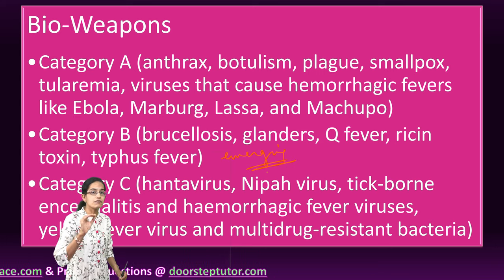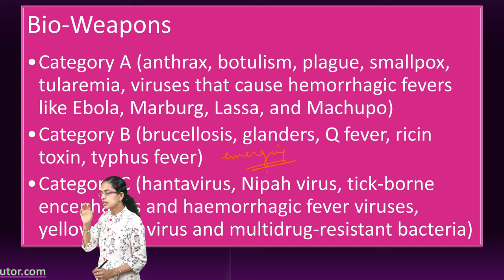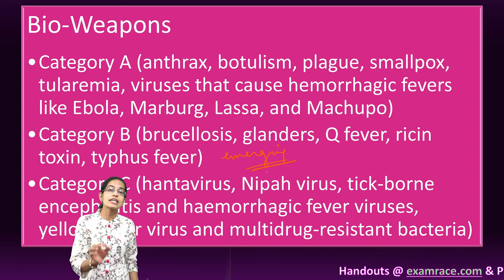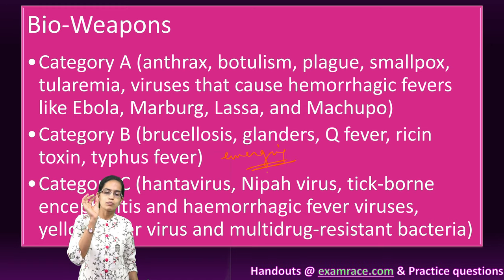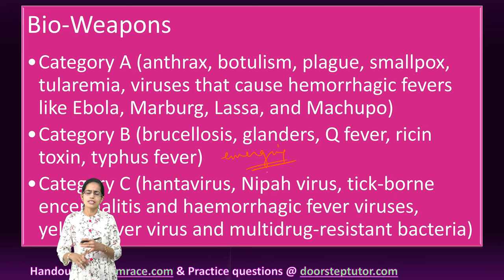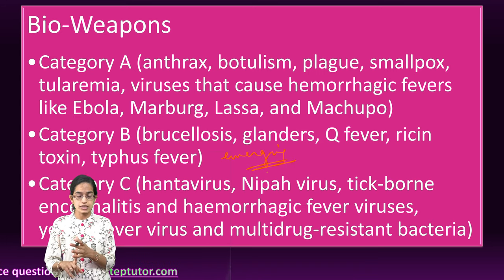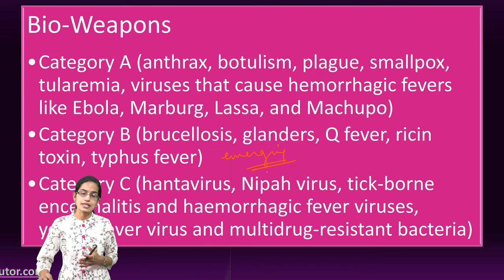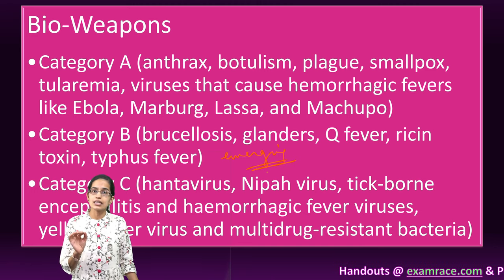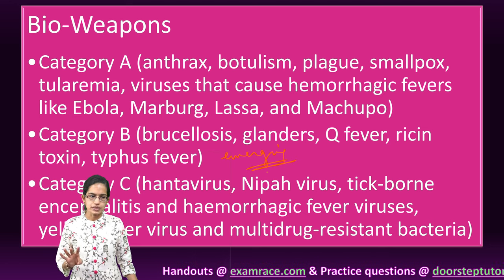Category C is a very risky category because these are bio-weapons that could be genetically created and engineered. Common examples would be Nipah virus, Hanta virus, major hemorrhagic fever-causing diseases, and multi-drug resistant bacteria that could be very detrimental and genetically engineered. Those are the three categories of bio-weapons.